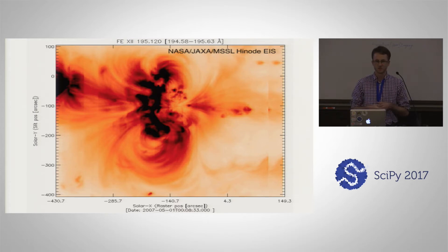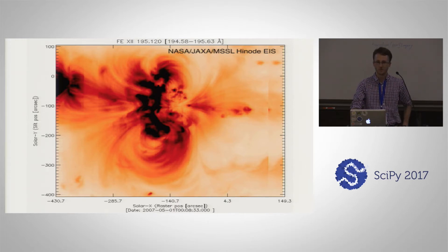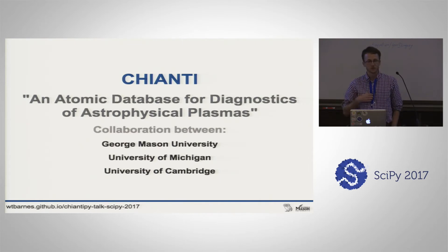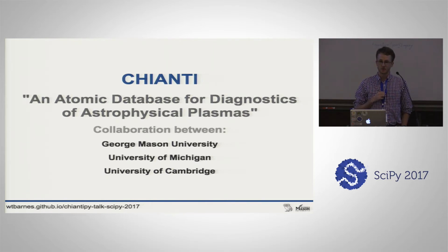We have all this great solar data and can make really nice pictures, but we want to do actual science with it. We want to learn something about the plasma on the Sun to understand the thermodynamics of the plasma in the corona. The tool that solar physicists have used for about 20 years is this atomic database called Chianti - an atomic database for diagnostics of astrophysical plasmas, focused on high temperature, low density, optically thin plasmas mostly in the extreme ultraviolet and X-ray.